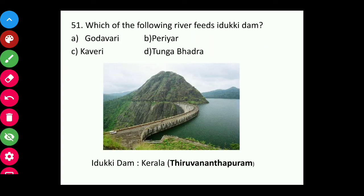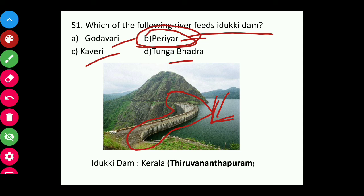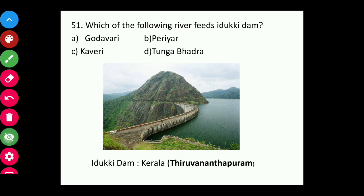Question fifty-one: Which of the following rivers feeds the Idukki Dam — Godavari, Periyar, Kaveri, or Tungabhadra? The answer is Periyar. This is the Idukki Dam, and this river is the Periyar River, located in Kerala, whose capital is Thiruvananthapuram.